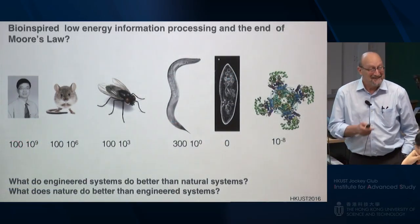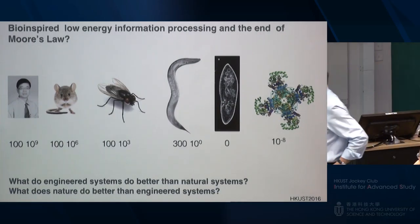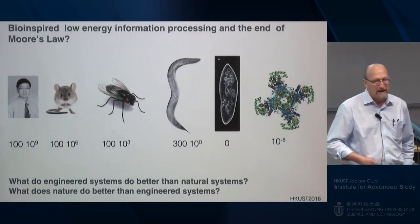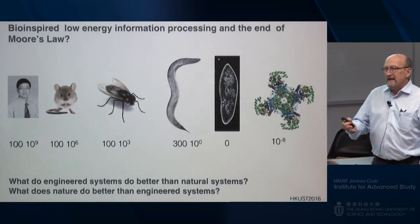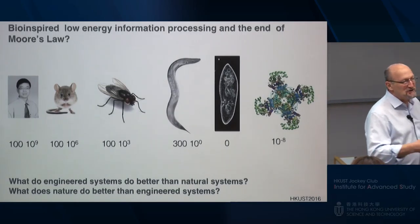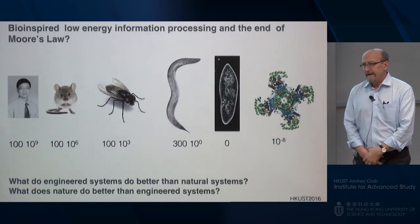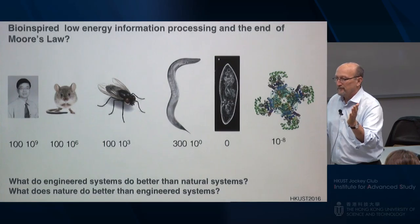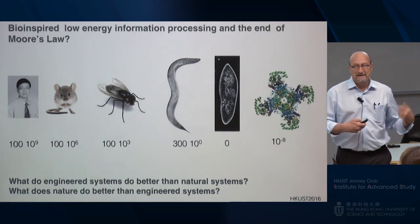The human brain has about 80 billion neurons — roughly 100 × 10⁹ — and with that it accomplishes amazingly challenging tasks: giving introductions, walking, talking, and computations we are unable to do in hardware today, such as instant image recognition, voice recognition, and separating faces in a crowd.